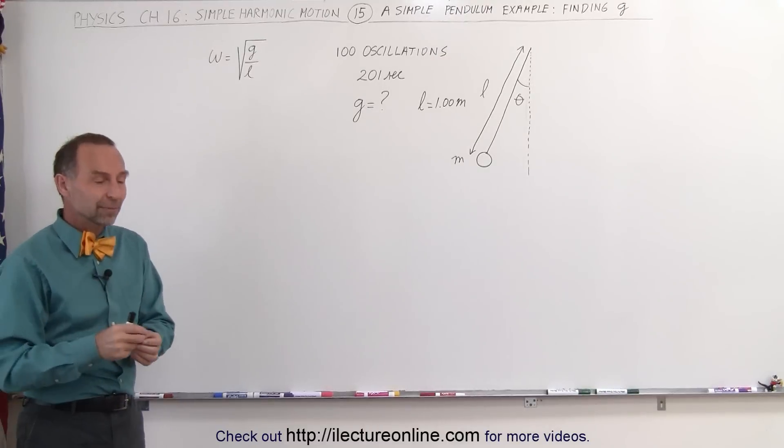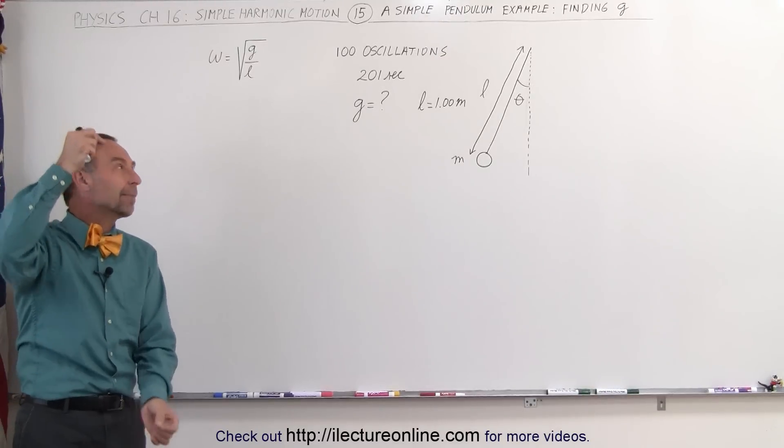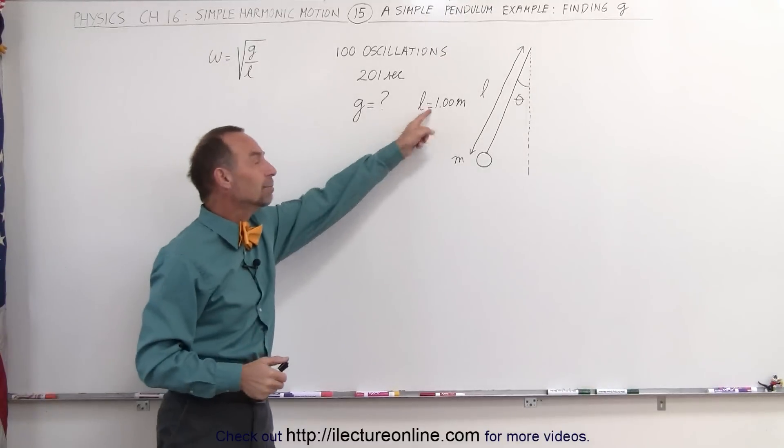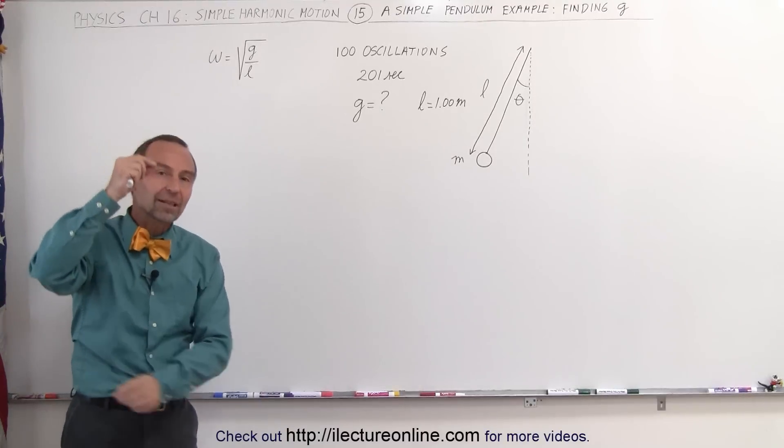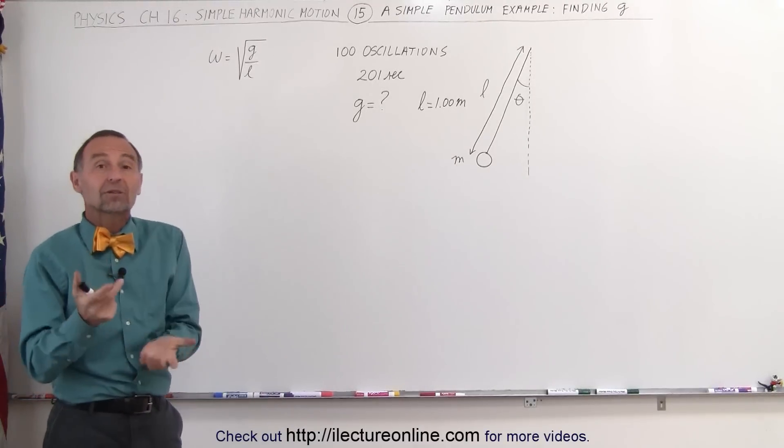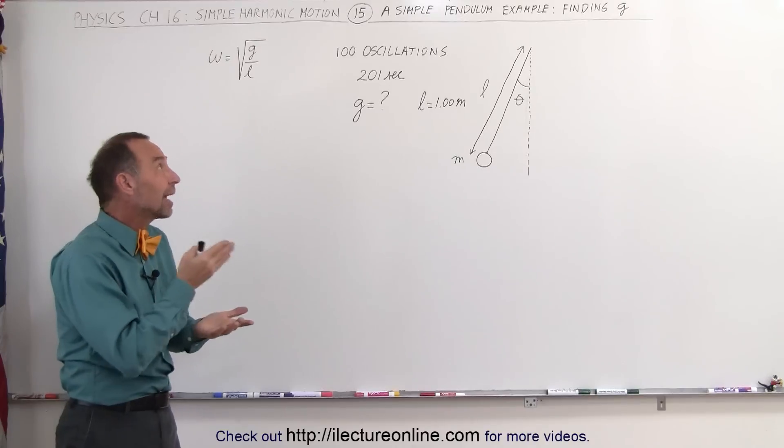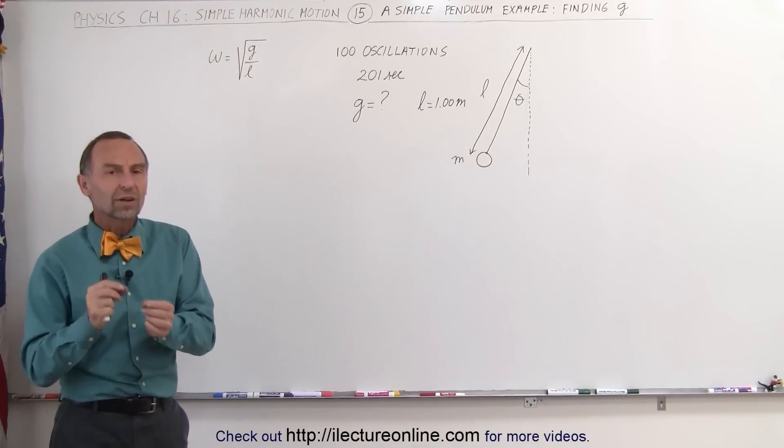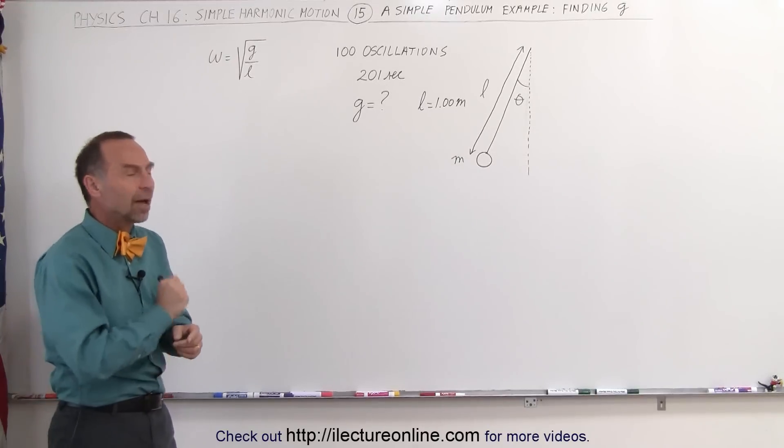Let's say we go to the top of a mountain, we take out a pendulum, let's say the pendulum has a length of exactly one meter. We allow it to oscillate back and forth 100 times, and we measure the time for 100 oscillations, and the time is 201 seconds. What is the acceleration due to gravity at the top of that mountain?